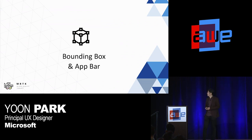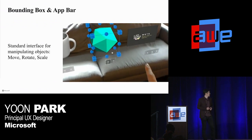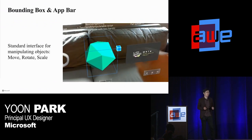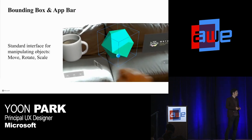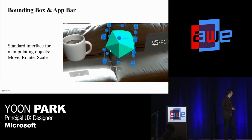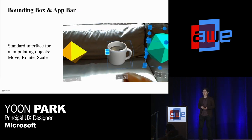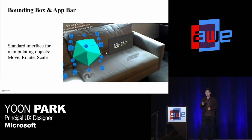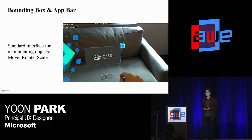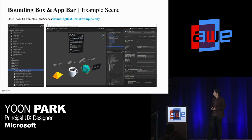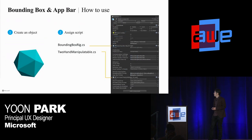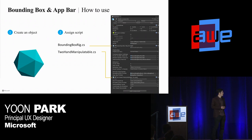Next, bounding box and App Bar (FBAR). The bounding box and FBAR is the standard interface for manipulating objects in Windows Mixed Reality. With this single interface, you can move, rotate, and scale an object. The FBAR displays a contextual menu — by default it shows hide, adjust, and remove buttons, so you can enter gizmo mode or remove the object. You can find the example scene under examples, UX, and scenes — it's named Bounding Box Gizmo Example. To use it, just assign the Bounding Box Rig script and you'll get the bounding box and FBAR. The two-hand manipulable script is optional if you want two-hand interaction.